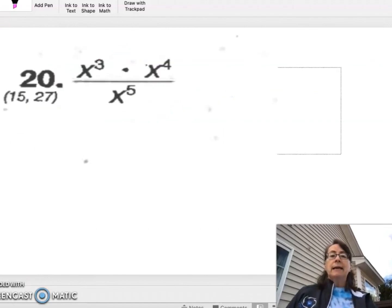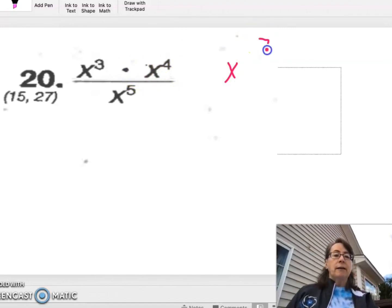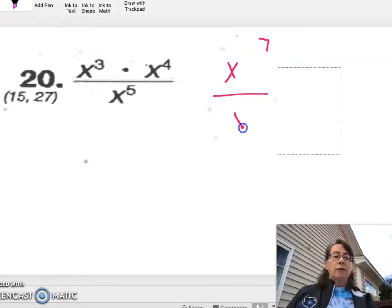Lastly, we have multiplication x cubed times x to the 4th is x to the 7th divided by x to the 5th. When we divide, we subtract the exponents and we get x squared. And we are done.